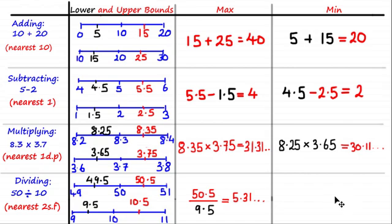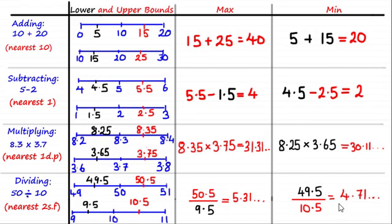To get the minimum possible value, we do the smallest number divided by the largest: 49.5 divided by 10.5, which equals 4.71 and so on. In general, it's a little easier to calculate the max and min when adding or multiplying rounded values — you need to be more careful when subtracting and dividing. I hope you understand the concept, and in the next tutorial we'll apply this idea to further real-world problems.